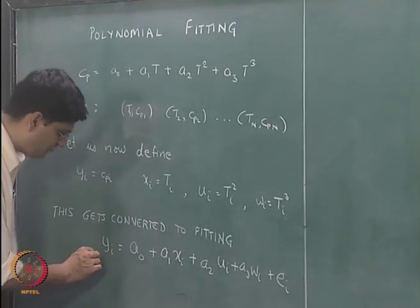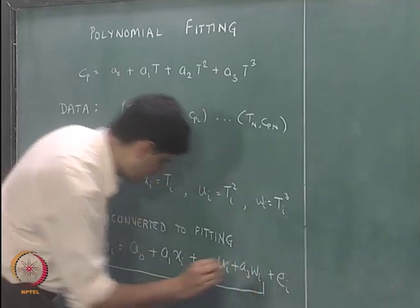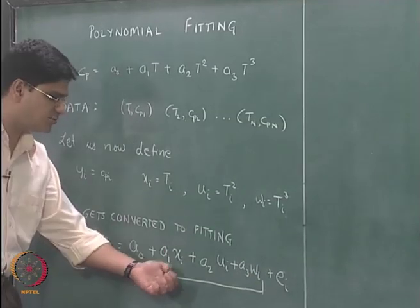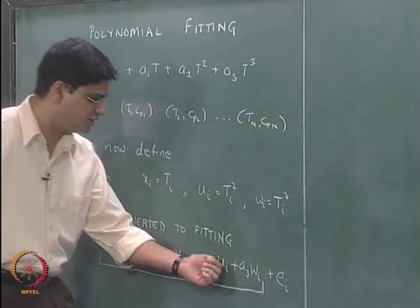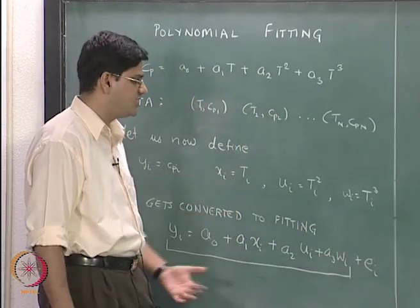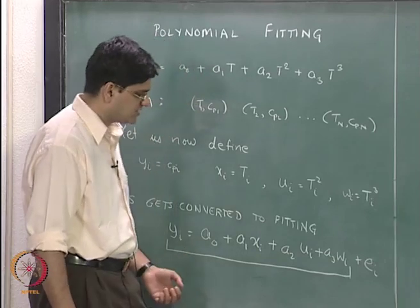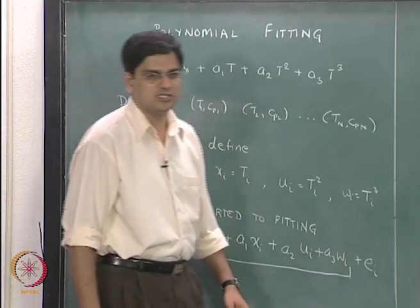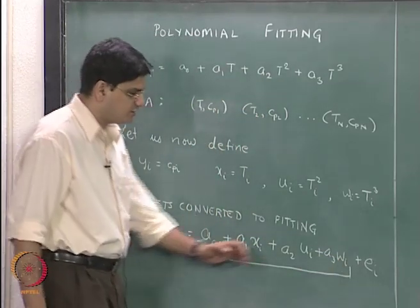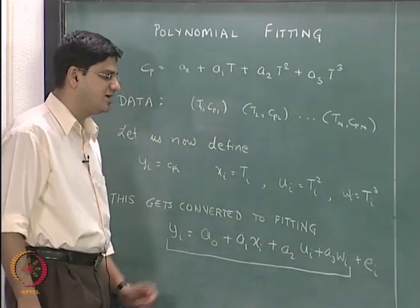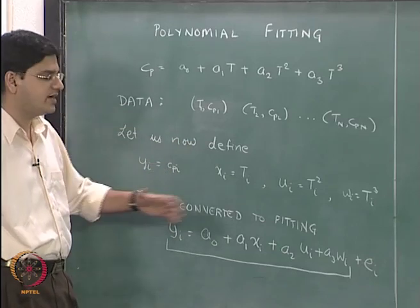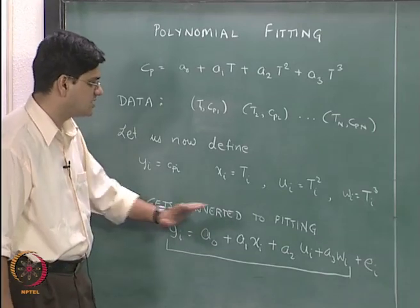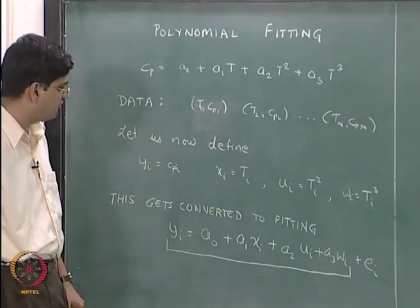It amounts to fitting the functional form a0 plus a1*x plus a2*u plus a3*w. In this case, x, u, and w are not three independent variables as we had in the previous lecture. Instead, x is going to be temperature T, u is T squared, and w is T cubed. Once we write it in this form, we can use the same ideas of multilinear regression to obtain the overall solution.